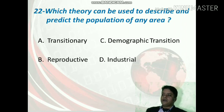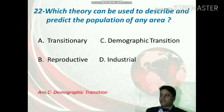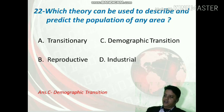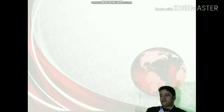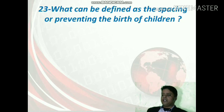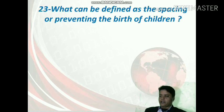Question number 22: which theory can be used to describe and predict the population of an area? The options are transitional theory, demographic transition theory, reproductive theory, or industrial theory. The correct option is C — demographic transition theory — this is the theory related to population growth and population change.